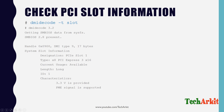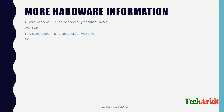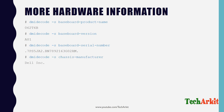The command dmidecode -t slot gives you all slot information on the motherboard. For baseboard hardware information, use dmidecode -s baseboard-product-name to get the exact baseboard model, which is useful if you need to replace it. You can also retrieve the baseboard version and serial number — which includes the service tag with the board number — using dmidecode -s baseboard-serial-number.